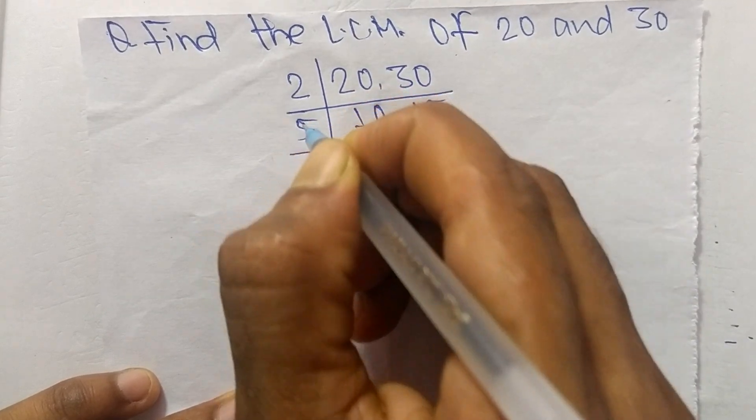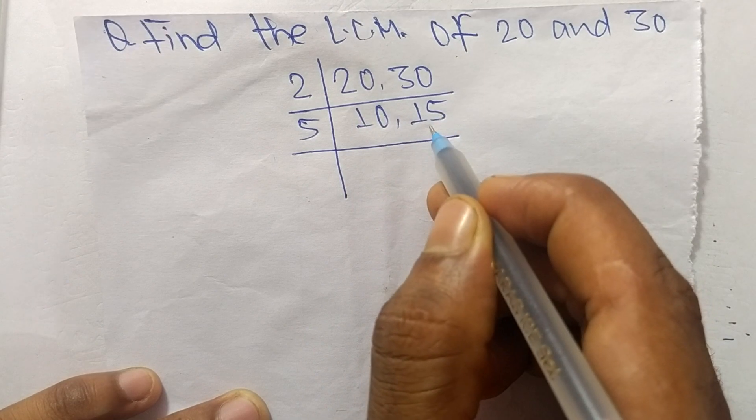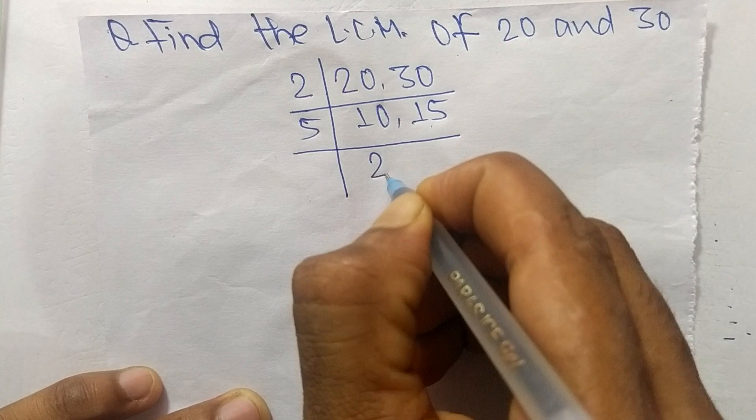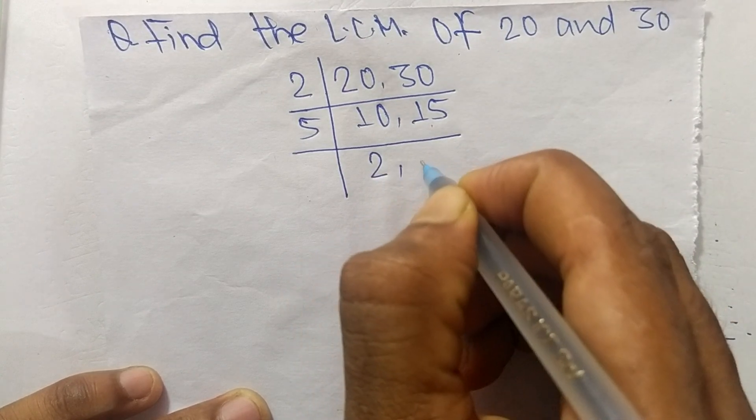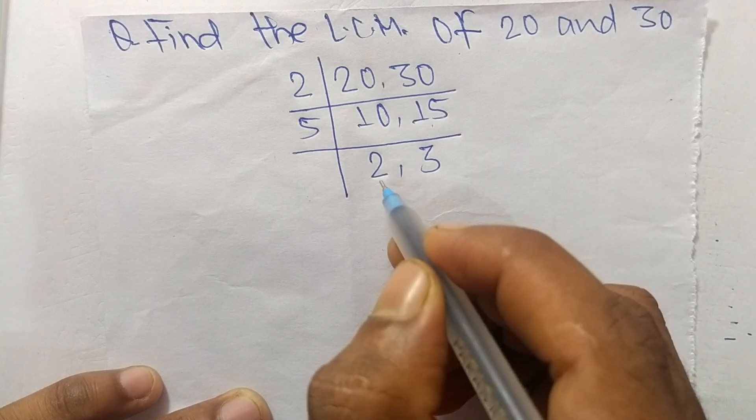That is 5. When we choose 3, then 3 can exactly divide 15 but can't divide 10, so 5 times 2 means 10 and 5 times 3 means 15. Now we have here 2